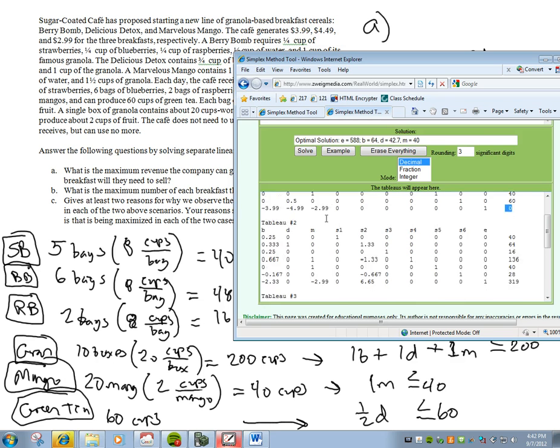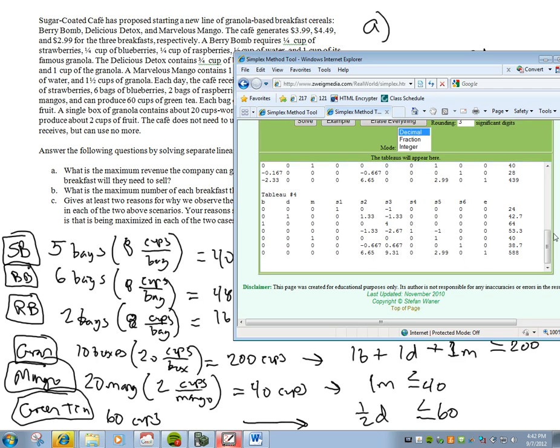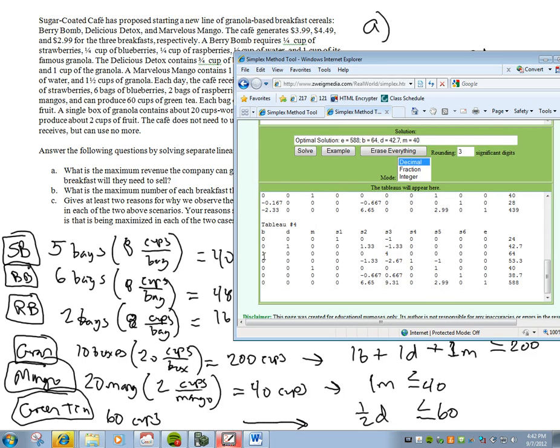And when we solve this thing, we come all the way down and see that we're going to produce each one of these since they're all active variable columns. So produce 64 berry bombs, which we see here, produce 42.7, so there's the delicious detox, 42.7 of those, so I might have to round that down to 42 delicious detoxes, then do 40, so here's the marvelous mango. So make 40 of those, and that will project a total revenue of $588.